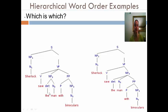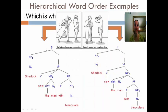The 'with binoculars' does not describe the man. What it describes is the verb phrase. So, Sherlock saw the man with binoculars — what this means is that Sherlock was using binoculars to see the man. And this is the difference between the two: this one means Sherlock saw the man using binoculars. And the other, in terms of its syntactical structure, means Sherlock saw the man who was using binoculars.